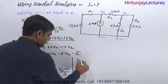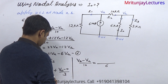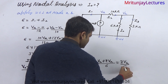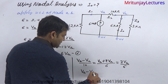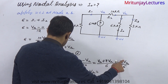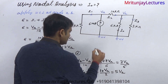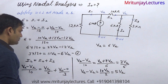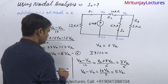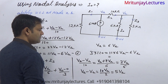Solving the node B equation: Va minus Vb divided by 10 equals, taking LCM 6, that is Vb plus 2Vb equals 3Vb divided by 6. So Va minus Vb equals Vb divided by 2, giving 10 times Vb divided by 2 equals 5Vb. Therefore Va equals 6Vb. Substituting into Equation 1: 11 times 6Vb minus 6Vb equals 60Vb.